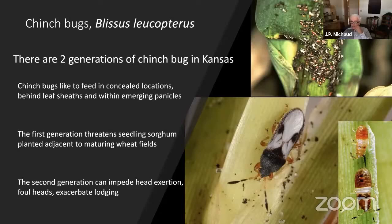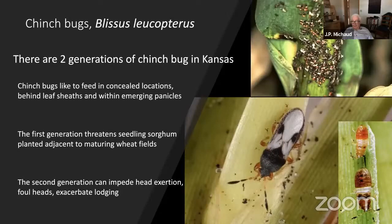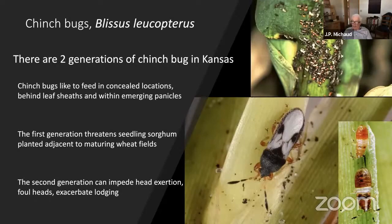Chinch bugs, when I first came here about 20 years ago, used to be a problem really limited to eastern Kansas, but lately we're seeing a lot more damage in central and western Kansas too. This pest seems to be changing its behavior in the crop and expanding its range westward in the state. We've seen an increase in both first and second generation chinch bug damage to sorghum in central Kansas, with second generation damage increasing especially over the past five years. First generation damage is caused by immature bugs that move out of ripening wheat fields and march into adjacent sorghum fields, where they can progressively kill row after row of seedling sorghum.